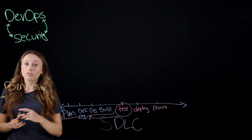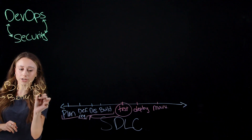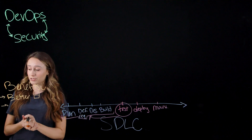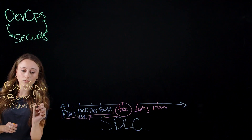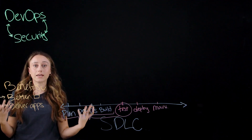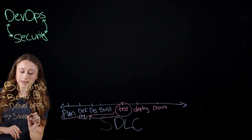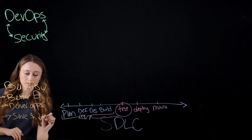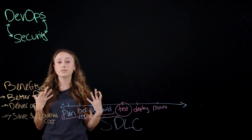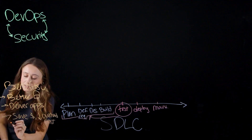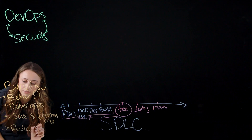Let's walk through some of the benefits of shift left security. First, you're going to have better security overall for your application, which is a huge benefit for both you and your end users. You can also deliver your apps faster, making them available to end users on schedule, which enhances their experience. As the developer, you'll save time and money while reducing overhead costs, because you don't have to go back and rework the application when security vulnerabilities arise. Finally, you will reduce overall delays in production.